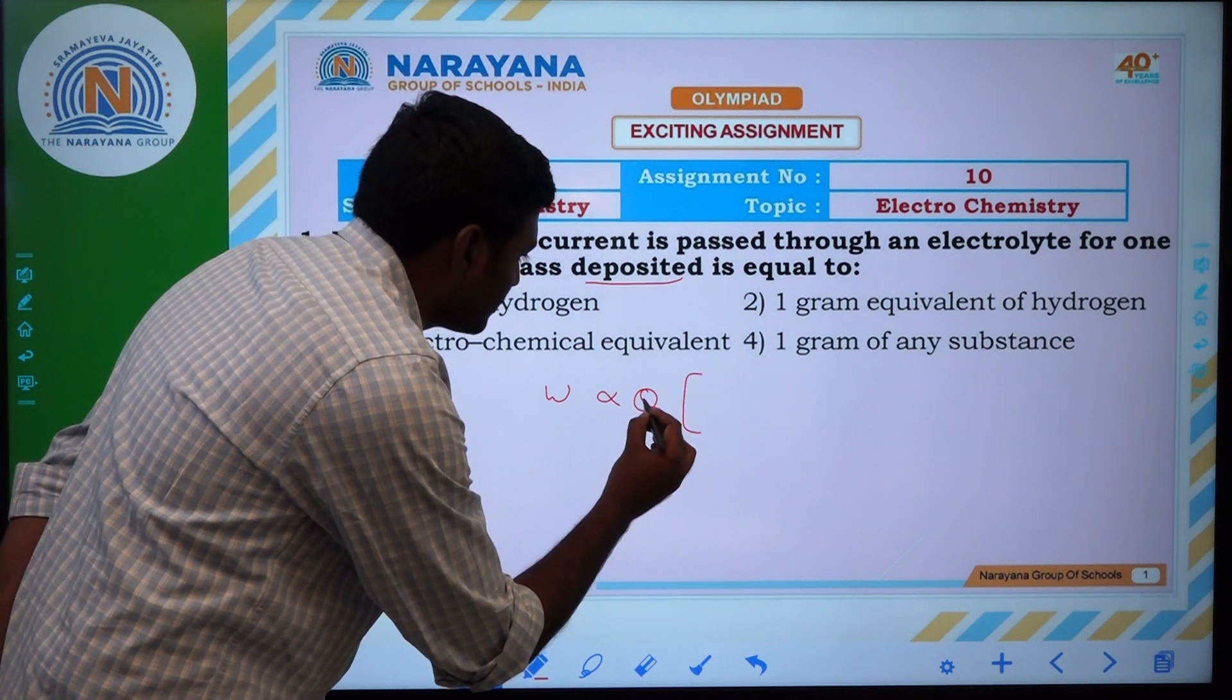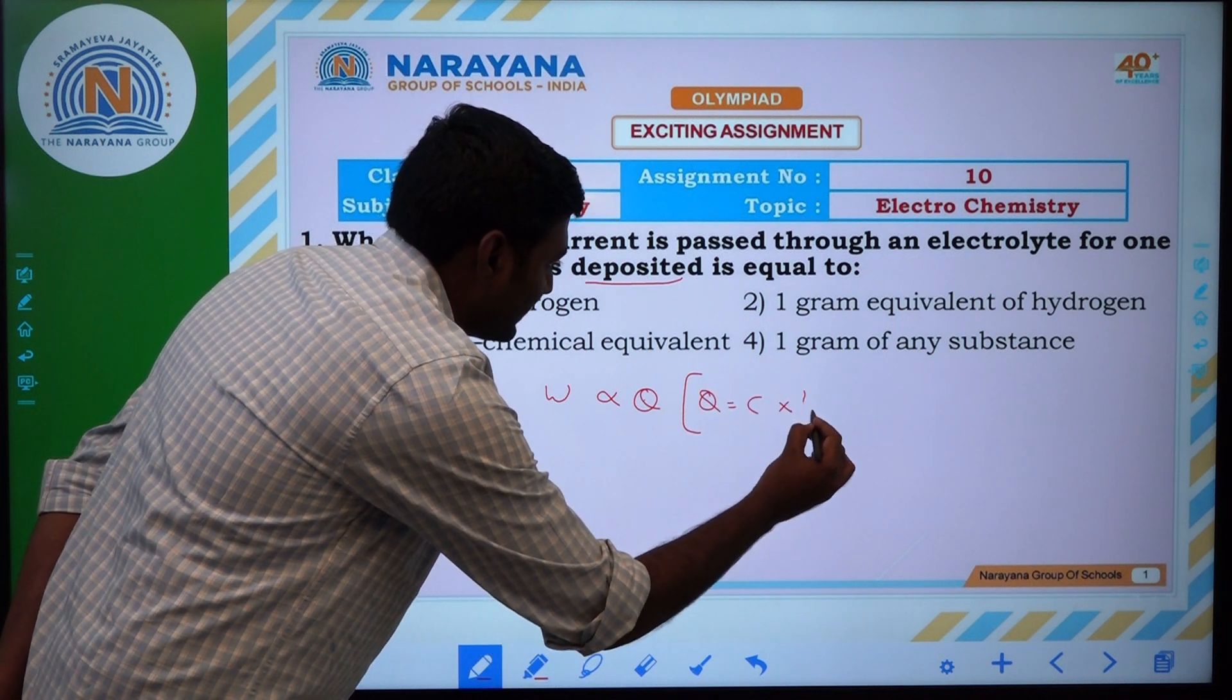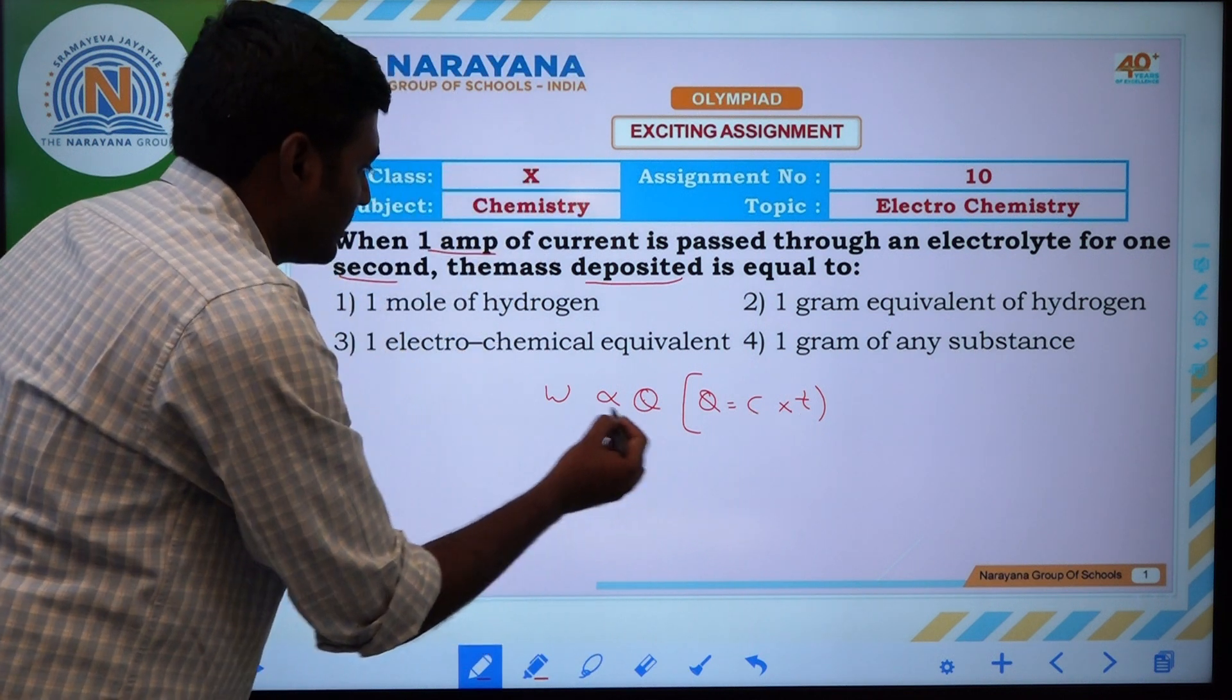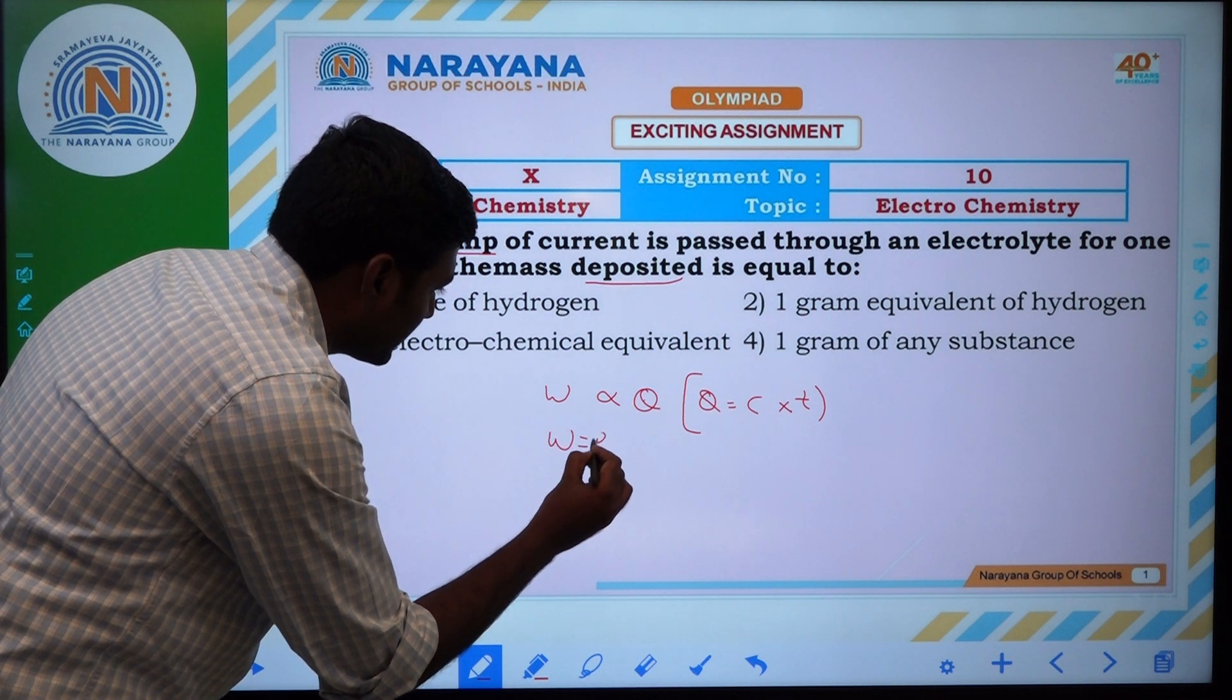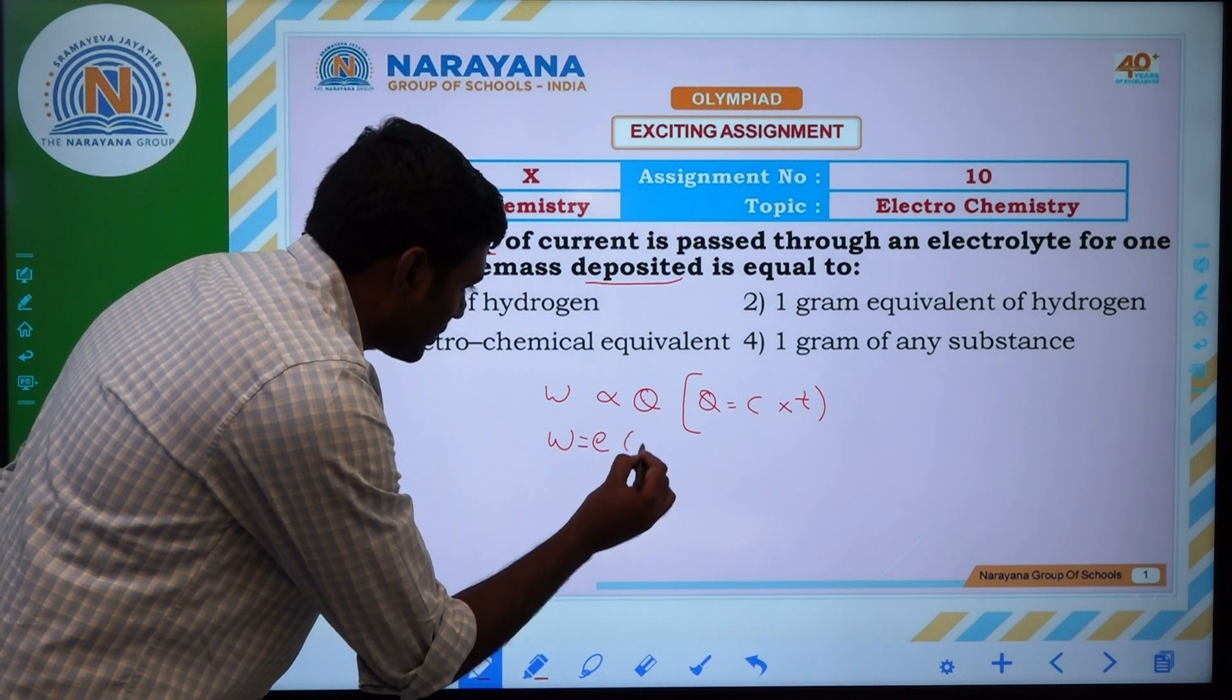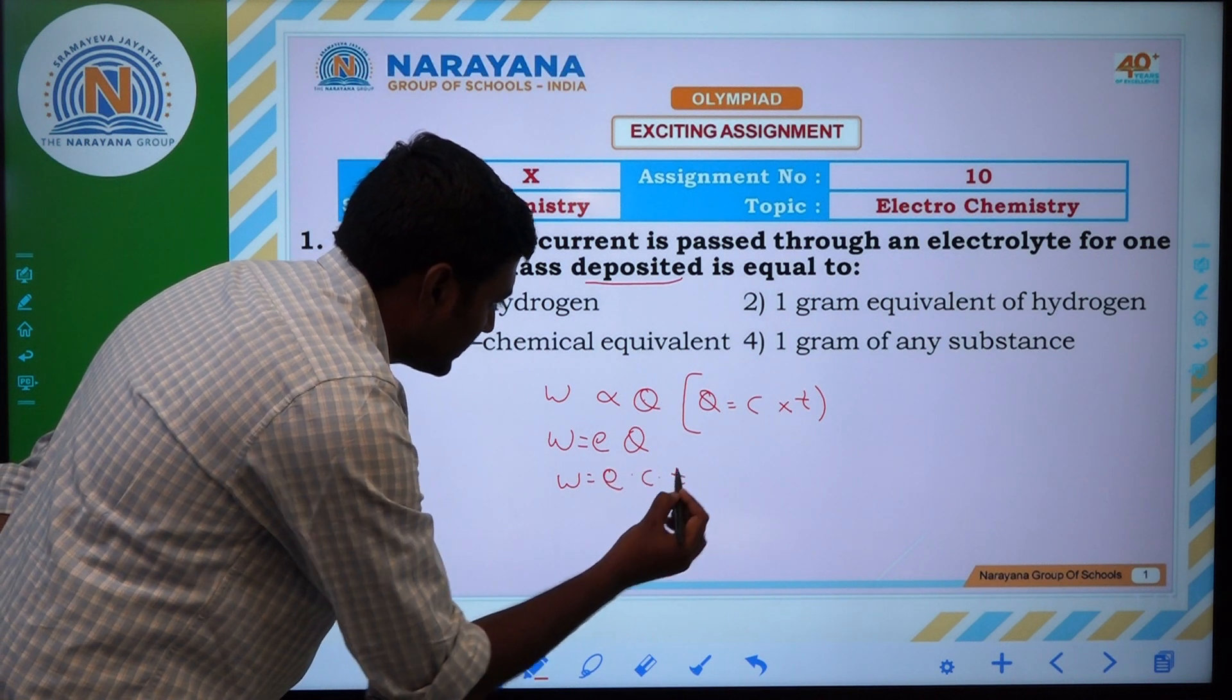Q is equal to charge in coulombs. Here, Q is equal to C into T. Current in amperes for one second. For removing this proportional constant, we put equivalent constant, it is called as electrochemical equivalent E into Q. We can write this as E into C into T.